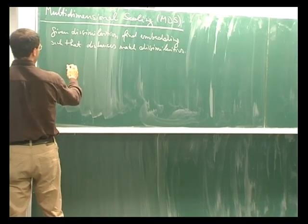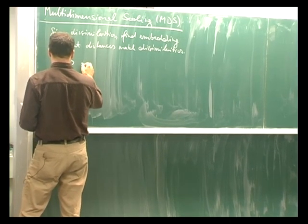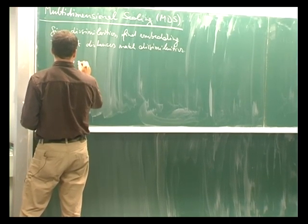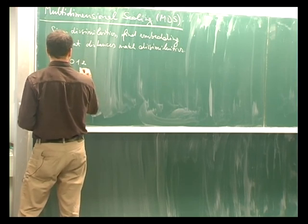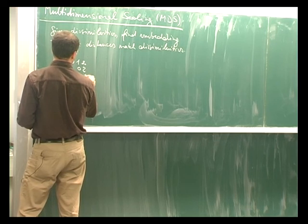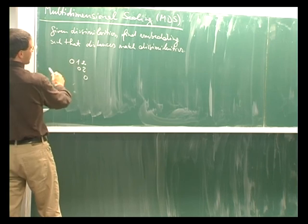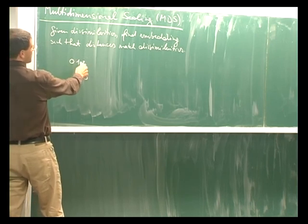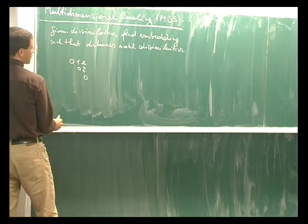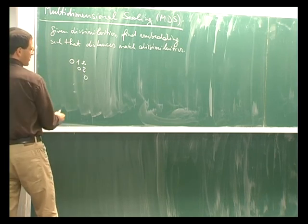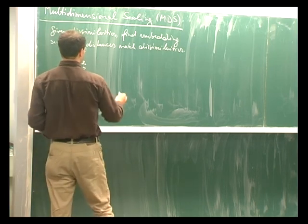Consider the following dissimilarity matrix. So we have three points and the dissimilarity between the first and second point is one. The dissimilarity between the first and third point is two. And the dissimilarity between the second and third point is two. And each point is similar to itself. So it has a dissimilarity of zero. So we can try and do that geometrically.